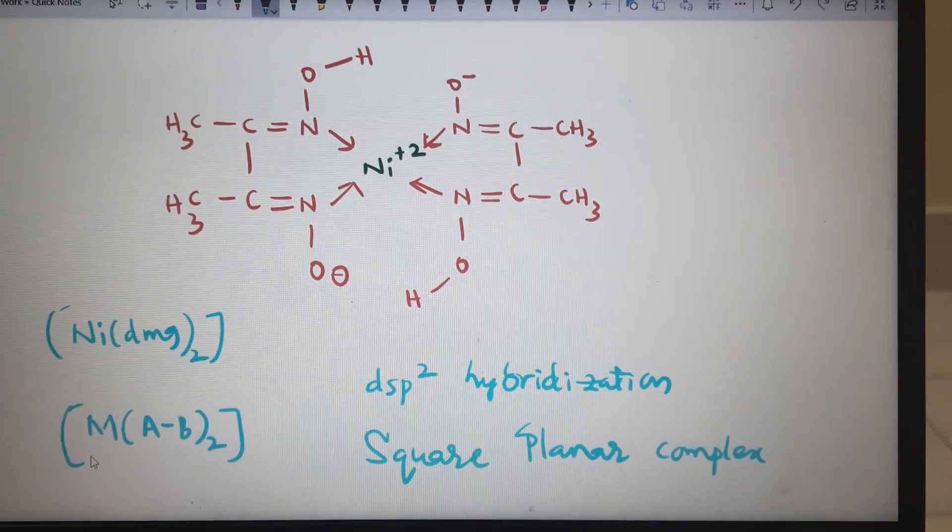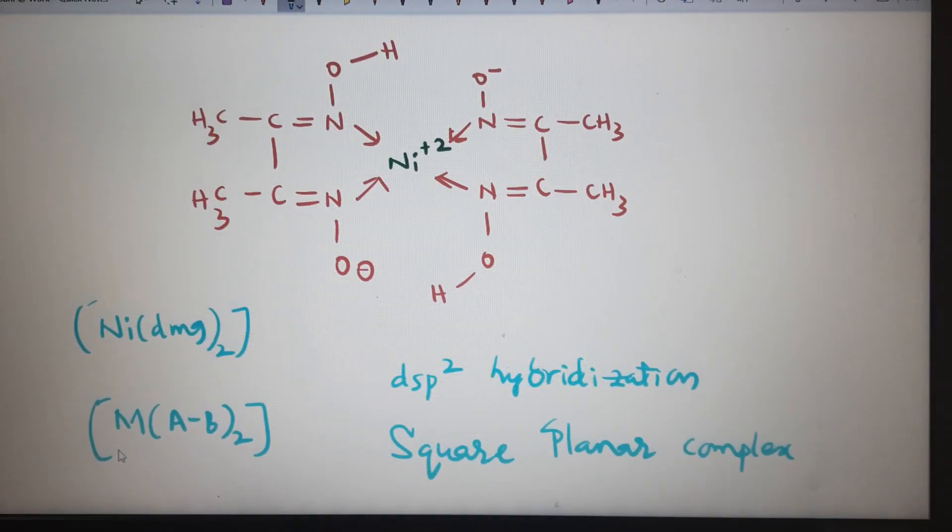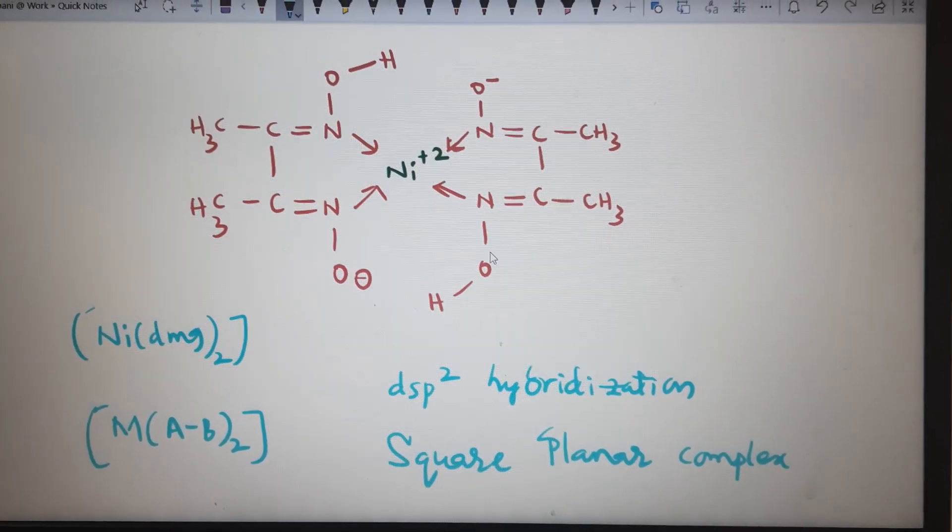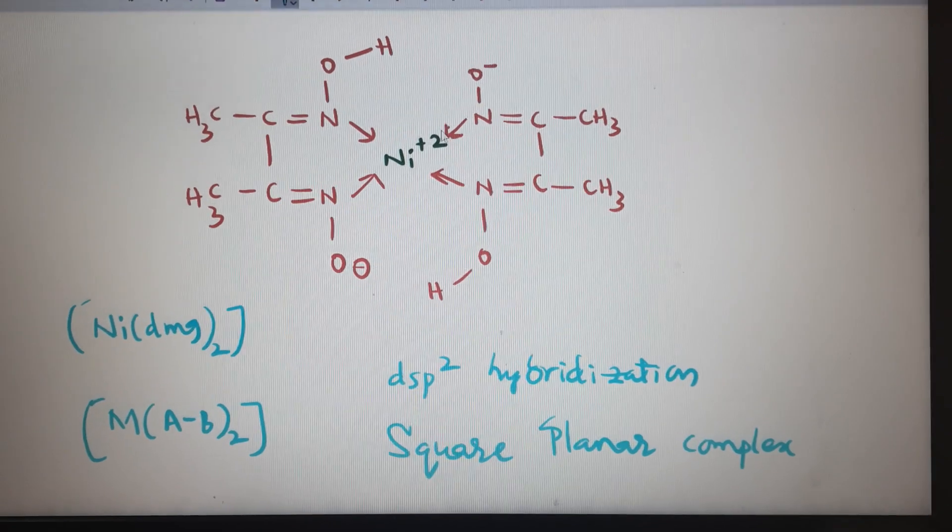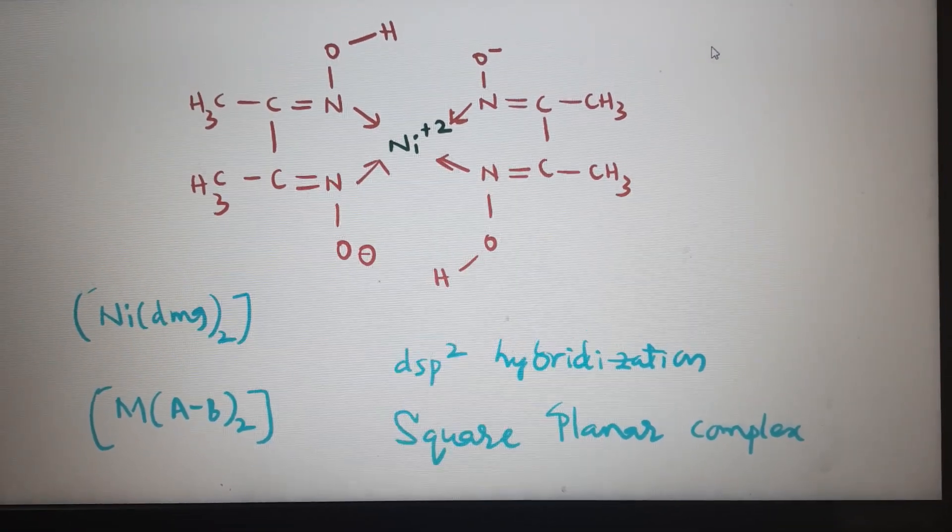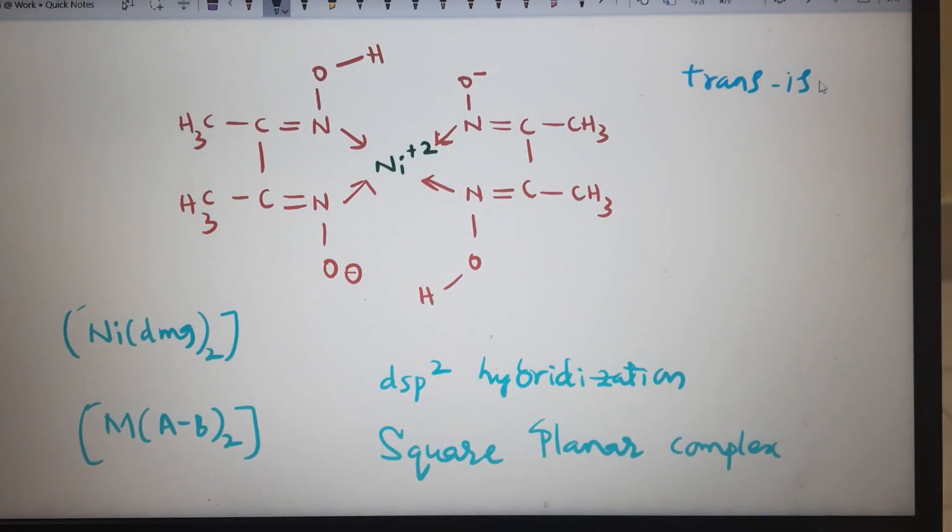So square planar complex can exhibit geometrical isomerism. Observe here: OH and OH in opposite position with 180 degree angle, so this is trans isomer.